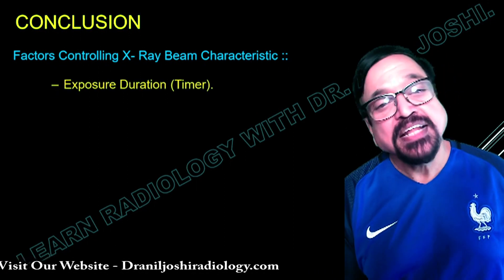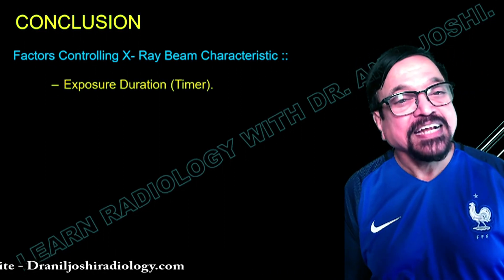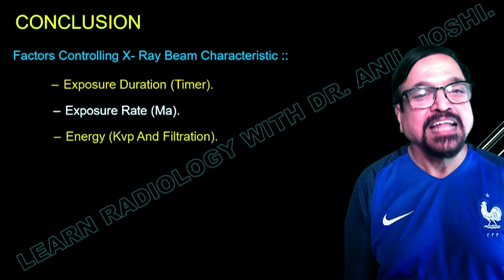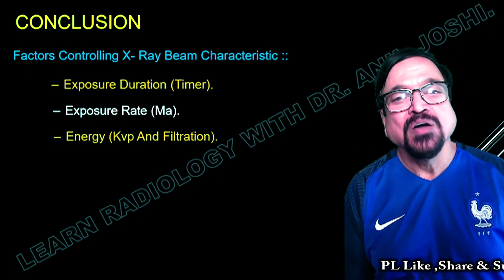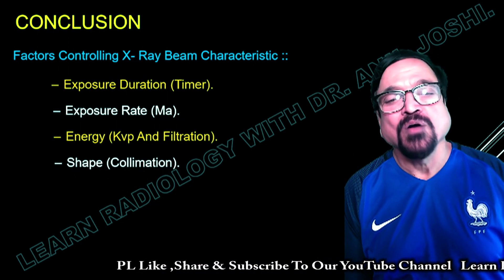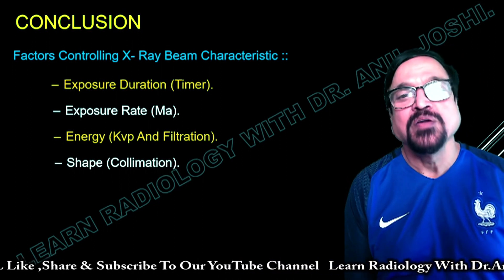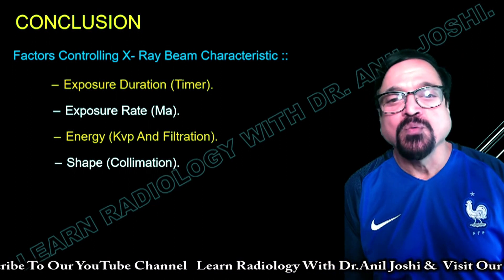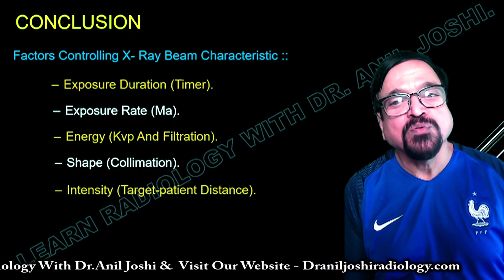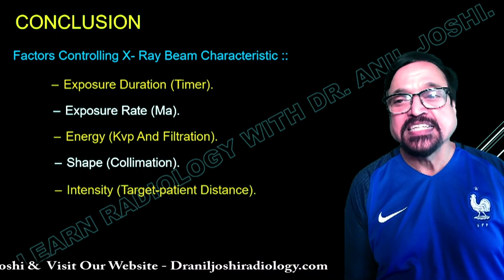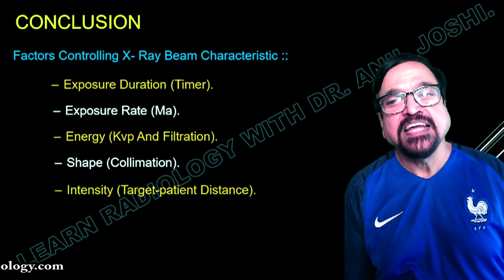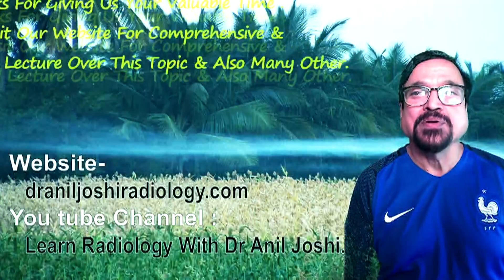In conclusion, the factors controlling X-ray beam characteristics are: exposure duration (time), exposure rate (MA), energy level of the photons (KVP and filtration, which blocks low energy photons), shape (collimation — which can be rectangular, circular, or adjusted as required, giving radiation only to the tissues of interest without unnecessarily exposing remaining tissues), and intensity (target-patient distance — if you increase the distance, the intensity will be less). With that, we come to the end of this lecture.